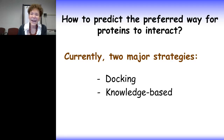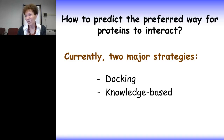What is the preferred way for proteins to interact? Currently there are two major strategies. The first is docking. Given two or more protein structures, predict their native interactions. Docking is difficult because there are many possible favorable ways for proteins to interact, and in the absence of additional biochemical data, it is very difficult to distinguish between the native interaction and other interactions. Docking becomes much more difficult if we don't even know if the proteins interact.